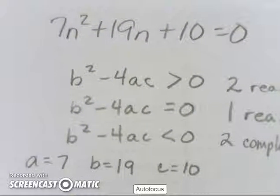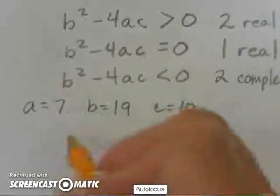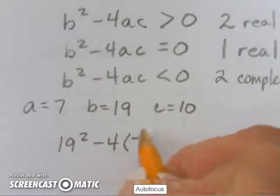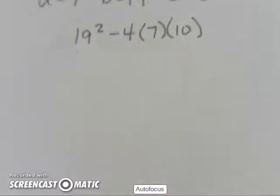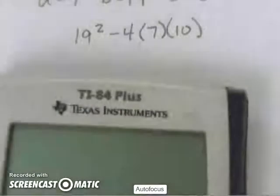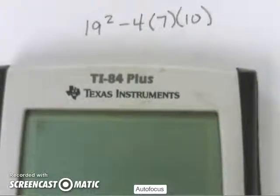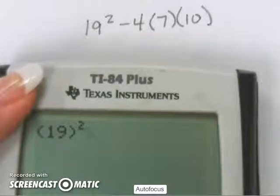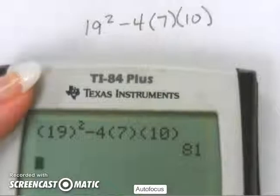I will plug this in to the discriminant to determine what my value would be. B squared minus 4 times 7 times 10 will help me know this answer. Now, again, you can simply type it in your calculator. 19 squared minus 4 times 7 times 10 gives me 81.